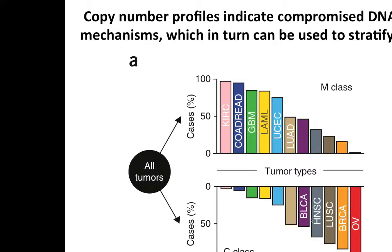The pattern of copy number change can be used to stratify different cancers into different groups. The abundance of copy number change can serve as a phenotypic classifier because it tells us what DNA repair abnormalities are compromised in the cell. So today we're talking about tumors on the copy number alteration end of the spectrum.